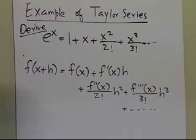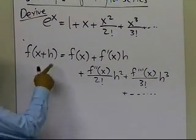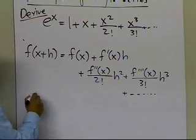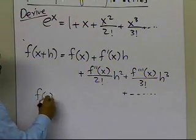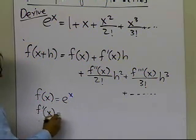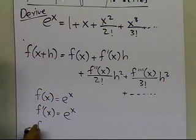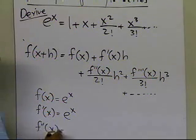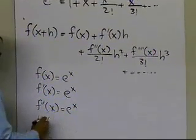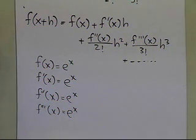Let's use this to derive the series. In order to do that, I need to know what the derivatives are. My function f of x is e to the power of x. Now, f prime of x, from your calculus class, is e to the power of x as well. The second derivative is also e to the power of x, and the third derivative is also e to the power of x. All the derivatives are of the form e to the power of x, because the derivative of e to the power of x is itself.